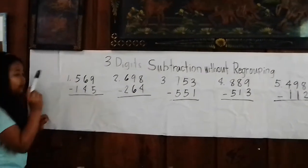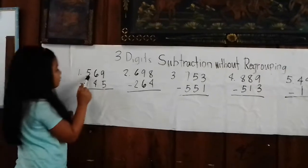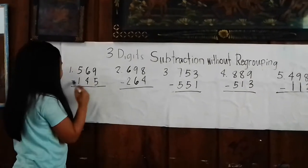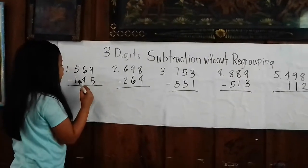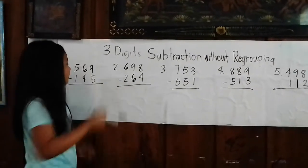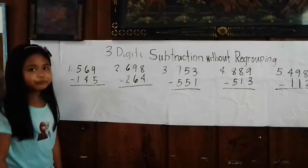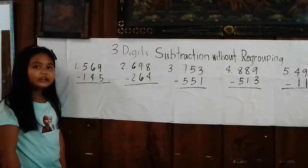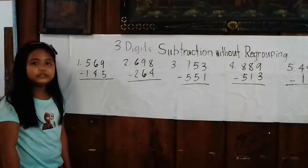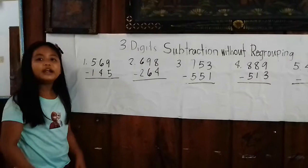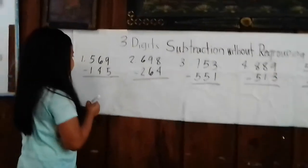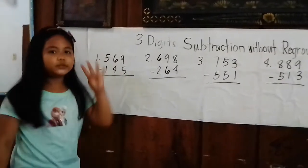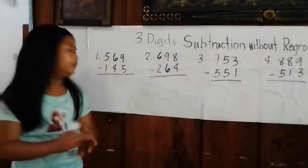Number 1: 469 minus 145. First, we subtract the ones place. 9 minus 5 equals 4.